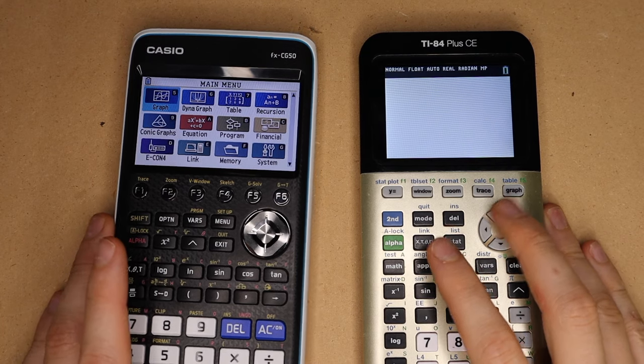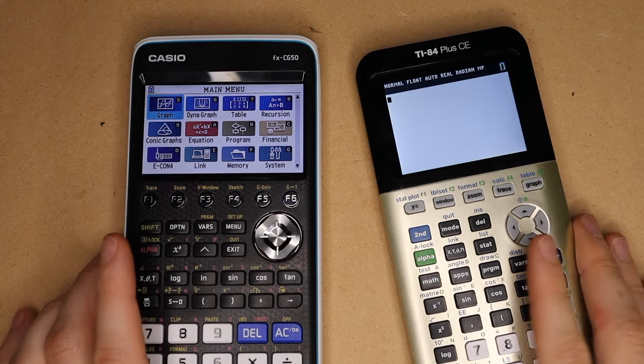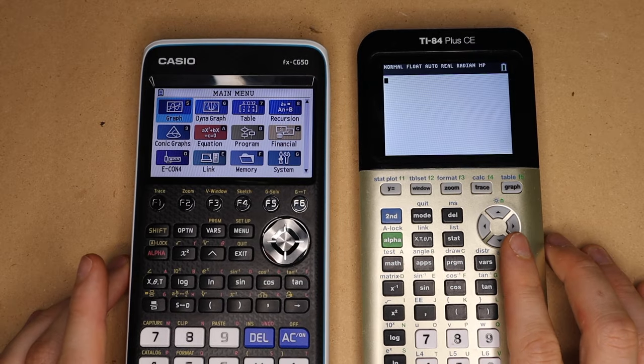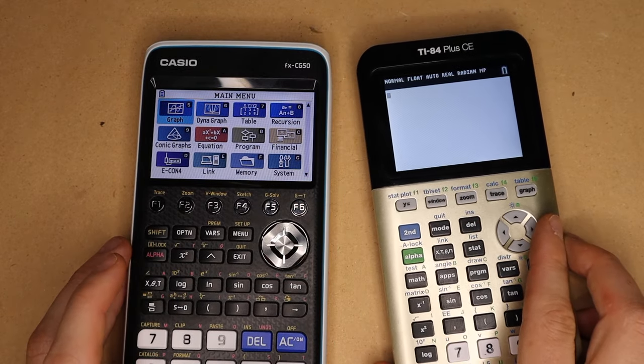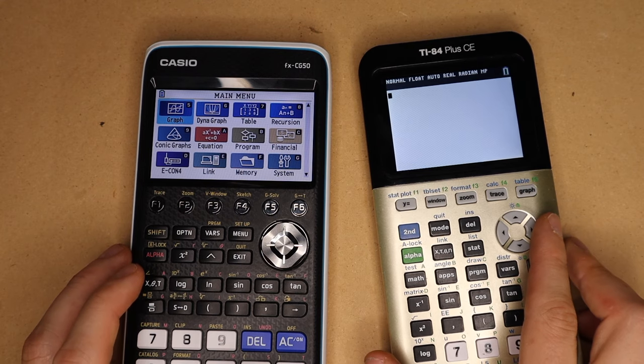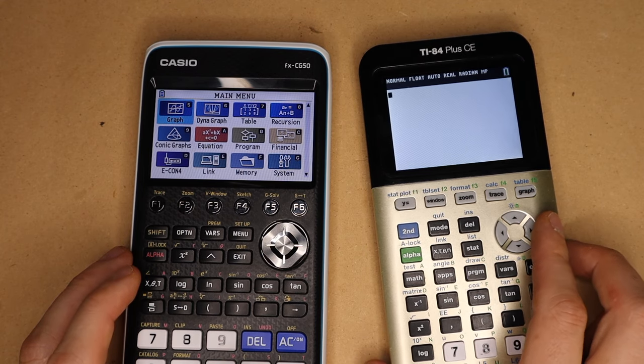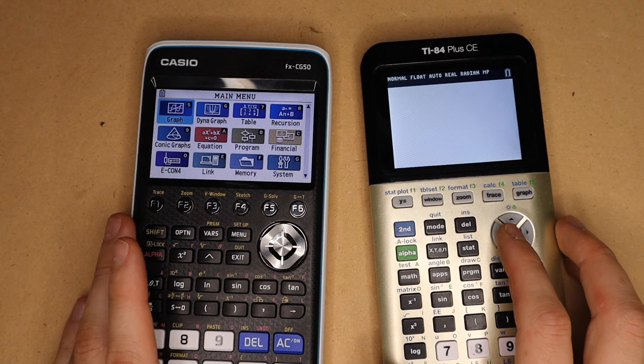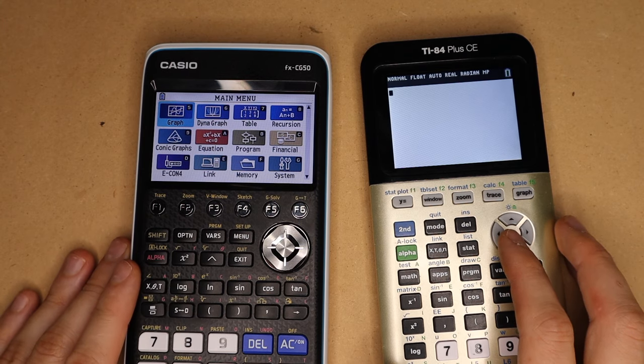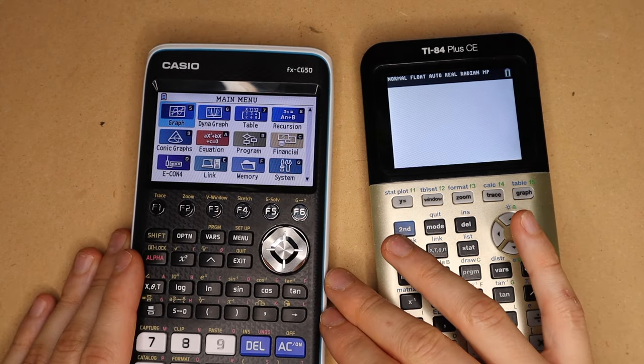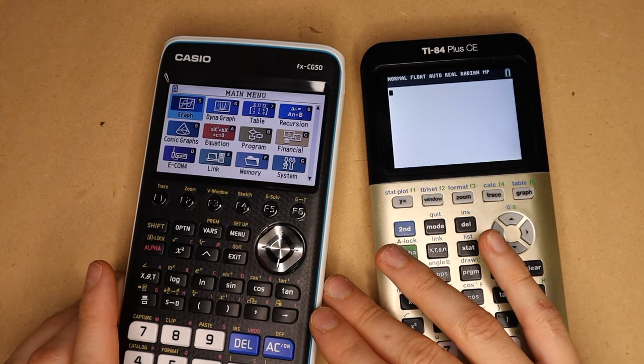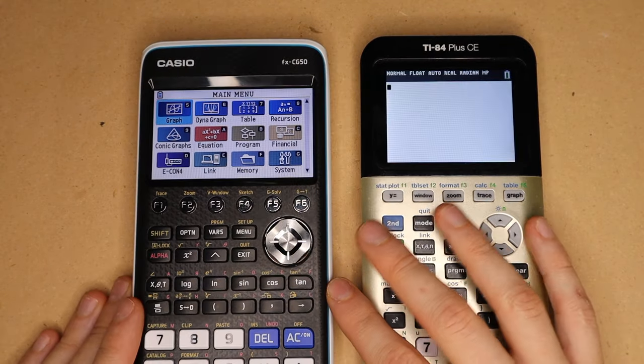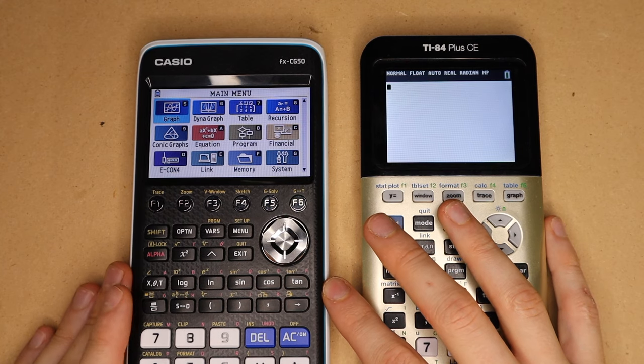So that's it for this comparison. In general, these two are very similar in terms of features and capabilities, but the TI-84 Plus CE is much more widely used, and a lot of math classes in high school require it, or at least they say they require it. But I see the Casio FX-CG50 as a good, if not better, and cheaper alternative that's not nearly as widely used, but I would say is just as capable. Anyways, thanks for watching, and I hope you found this useful.